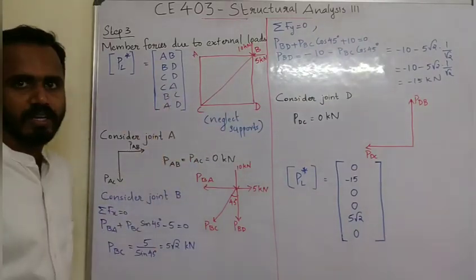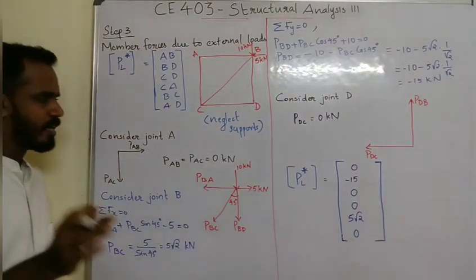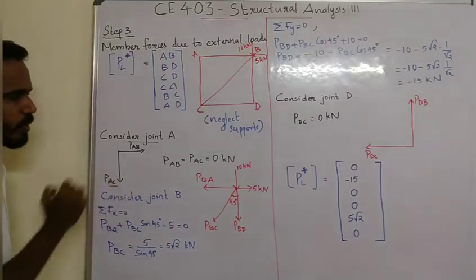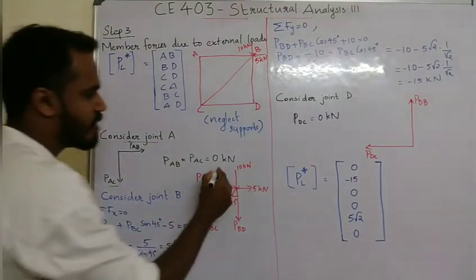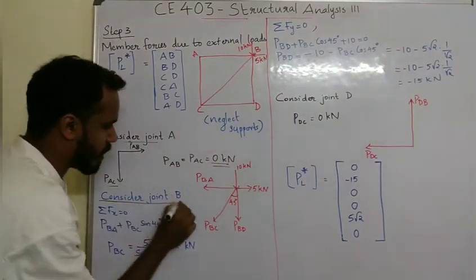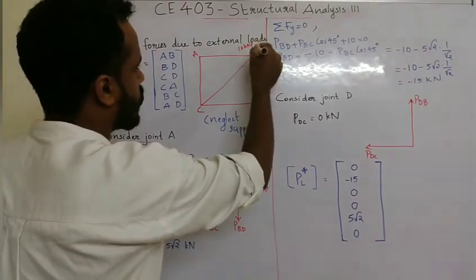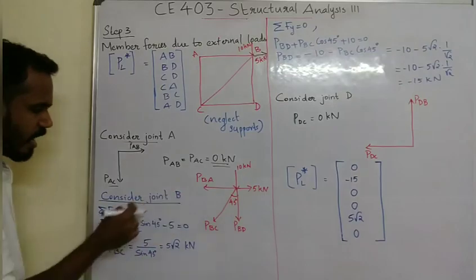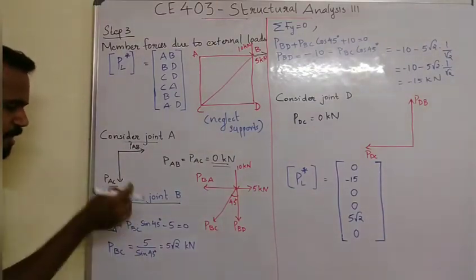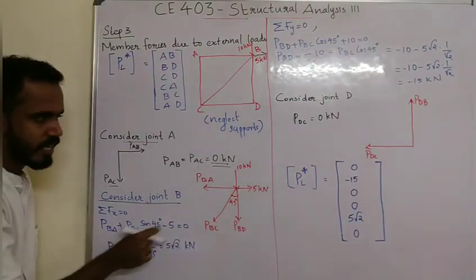AD dial is 0. We take a photo of the member forces and consider joint A. At joint A, PAB and PAC — the value is 0. At joint B, the sigma Fx equals 0 and sigma Fy equals 0.